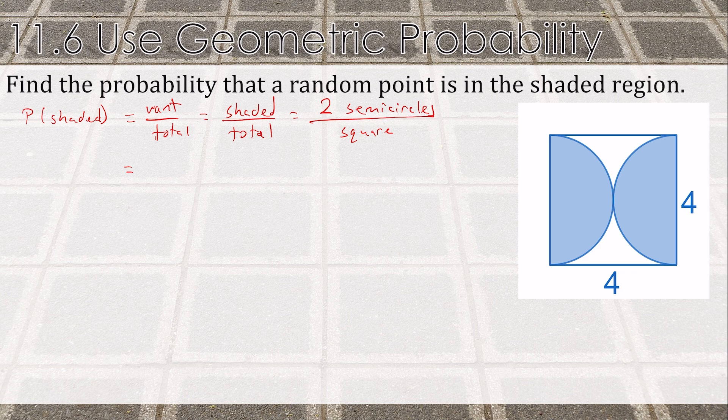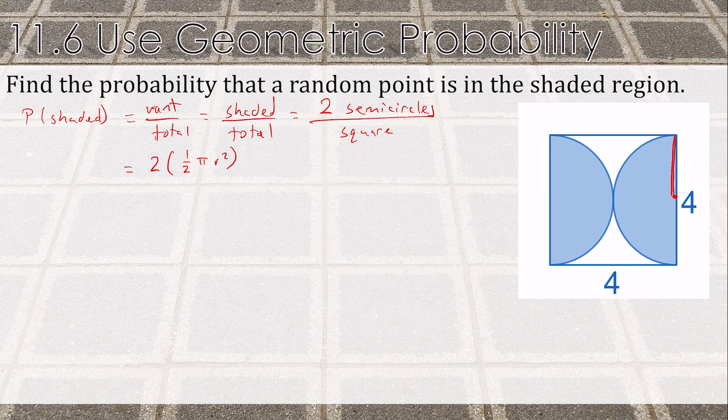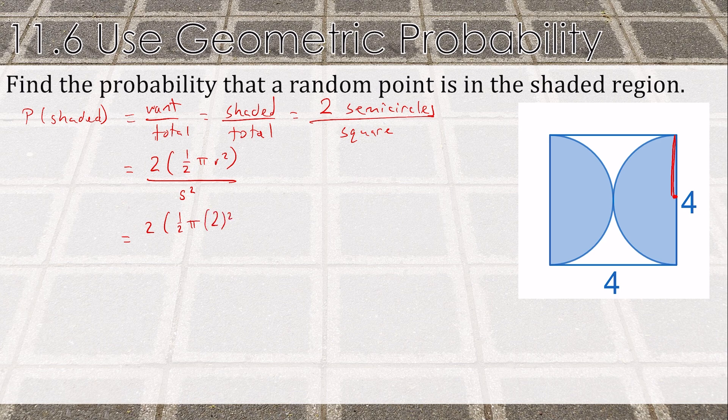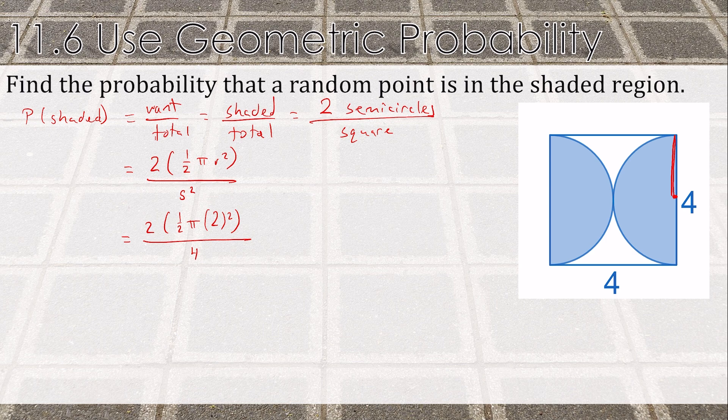This is semicircles. That would be the radius. So we have two of these, and each semicircle will be half the area of the full circle. And the square is side-squared. The radius is 2, and the side is 4.